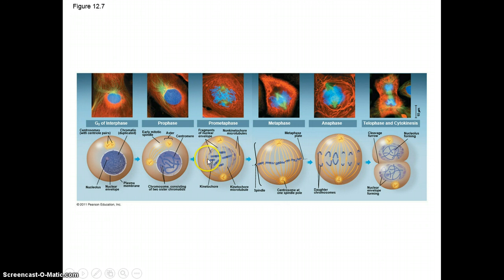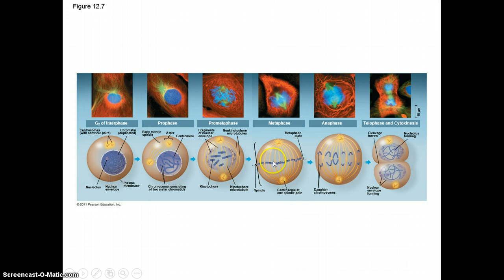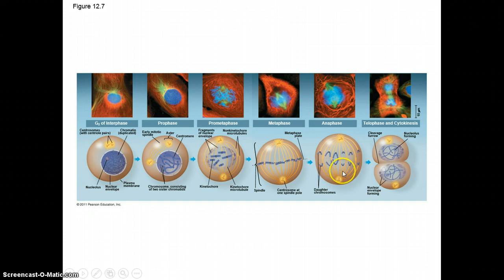In prometaphase, the chromosomes start to align in the center of the cell. With no nuclear membrane remaining, each spindle fiber attaches at a kinetochore, which is typically where the centromere is. Once all chromosomes are lined up at the metaphase plate, that is metaphase. Then in anaphase — both begin with the letter A — the spindle fibers attached to the kinetochore shorten, pulling each chromosome closer towards the centriole.